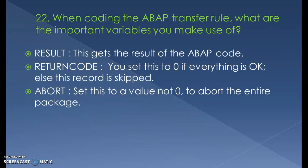When coding ABAP transfer rules and transformations, what are the important variables? We have result, return code, and abort. The result variable holds the final value of the ABAP code, which is passed to the field called result in the class implementation within the transformations. Return code is set to zero if everything is okay; otherwise that record is skipped. Abort is set to a non-zero value to abort the entire package.